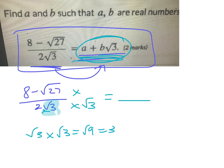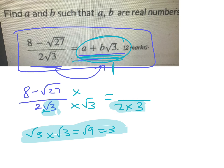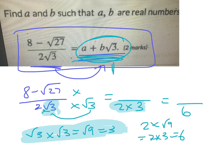In the solution there's no root three on the bottom, only a root three on top. So you go two times root three times root three: root three times root three is nine, and two times root nine is two times three, which is six. So the denominator is six.